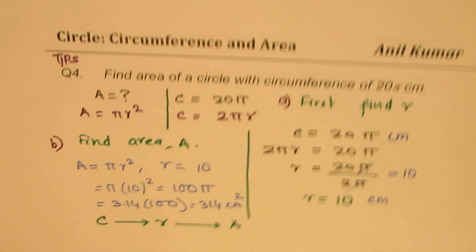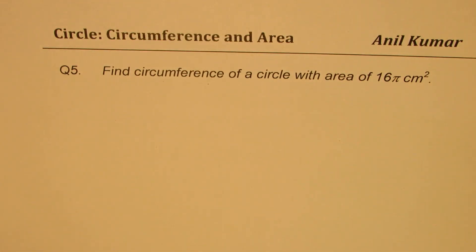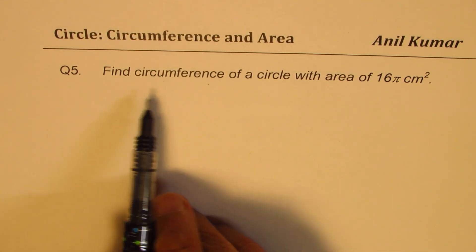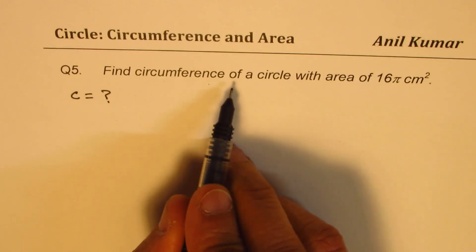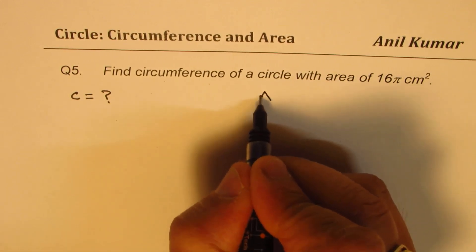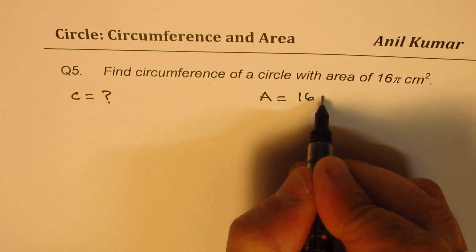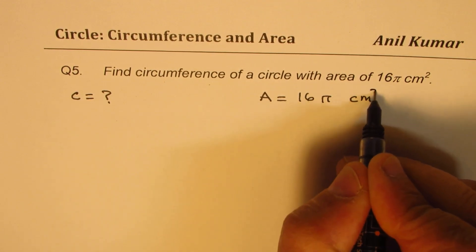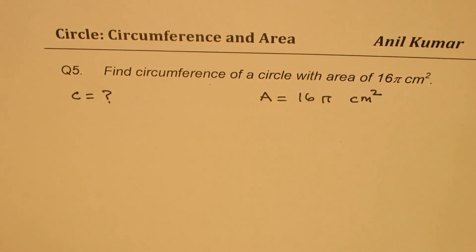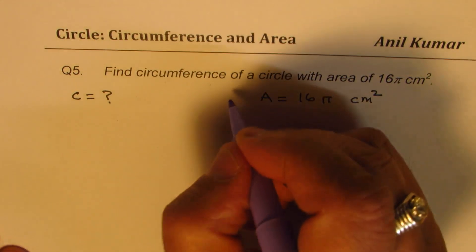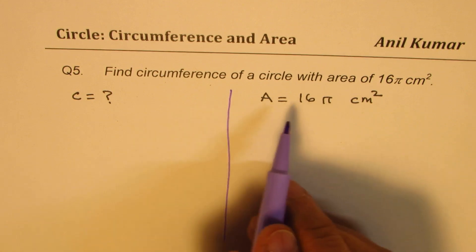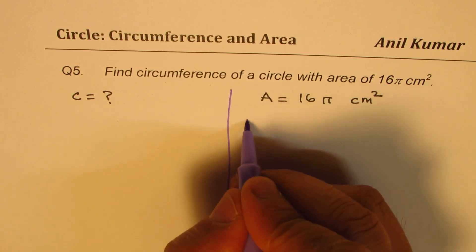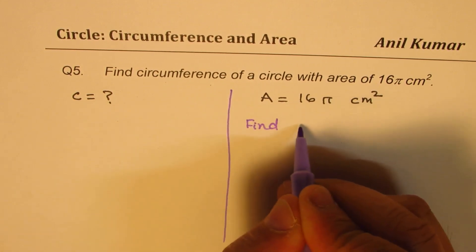Now, here is the last question. I'd like you to pause the video and answer this question on your own. Find circumference of a circle with area of 16π centimeters squared. Since we know the area, the first step will be to find R.